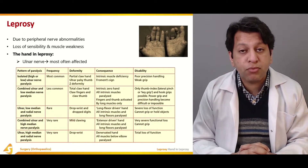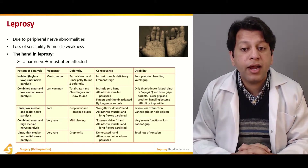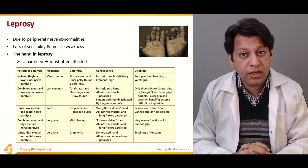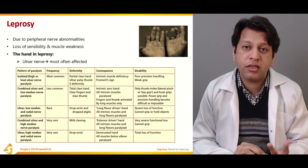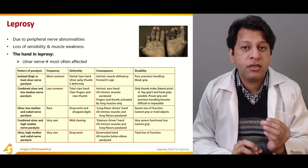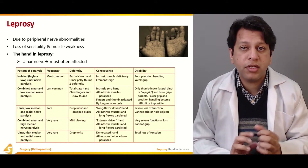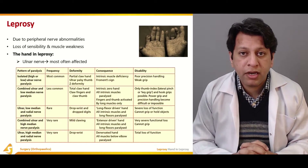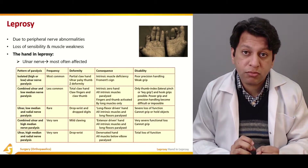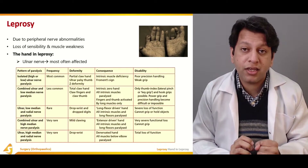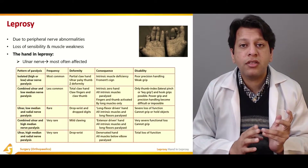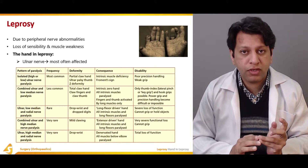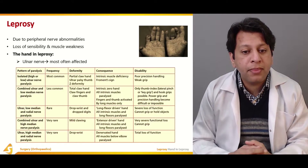With isolated ulnar nerve injury, there is poor precision handling and a weak grip. Although the median and radial nerves are functioning — allowing some pinch and hand movement — the grip is weak because the ring and little fingers are not working properly.